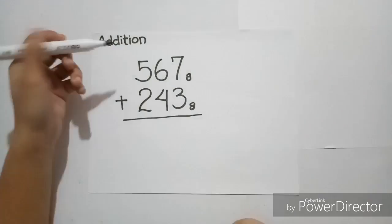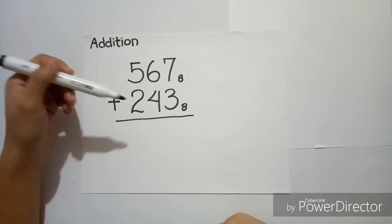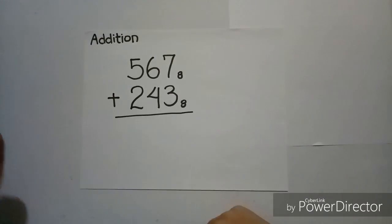For the addition, let's have 567 base 8 plus 243 base 8 as an example.